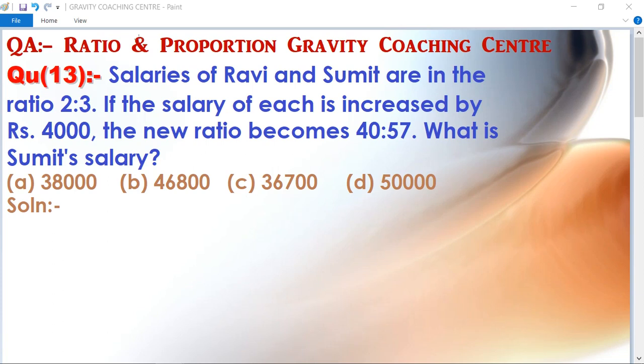Salaries of Ravi and Sumit are in the ratio 2:3. If the salary of each is increased by Rs. 4000, the new ratio becomes 40:57. What is Sumit's salary?